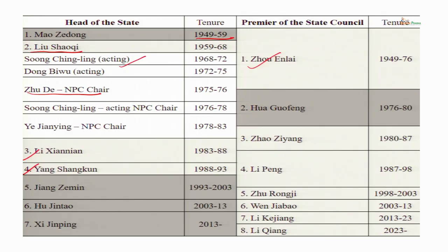Interestingly, Hua Guofeng was the only paramount leader to also be premier, because there was no post of state chairman at that time. He was head of the party, head of the military as chairman of the Central Military Commission, and also premier of the state council. Then he was replaced by Zhao Ziyang as premier. Zhao Ziyang introduced the reforms of Deng Xiaoping. He remained premier until 1987 when he was promoted to General Secretary of the Communist Party, replacing Hu Yaobang.